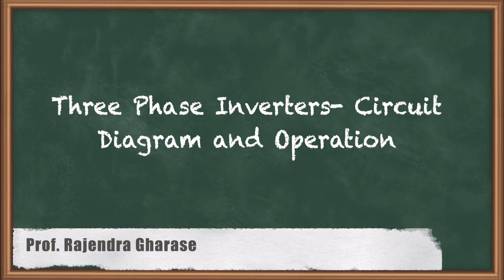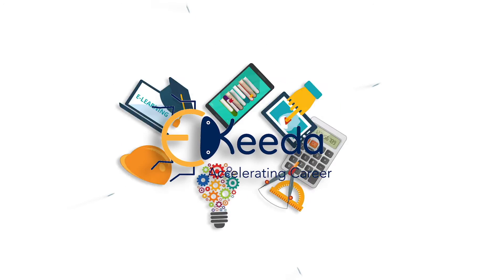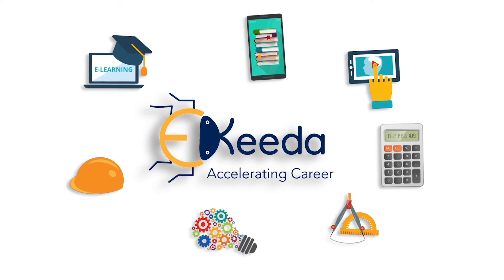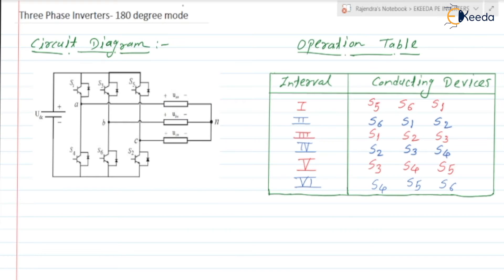In this video we are going to discuss the circuit and operation table of three-phase inverter 180 degree conduction mode. For the 180 degree conduction mode, here we have a circuit diagram. This circuit diagram is common for 180 degree as well as 120 degree conduction mode.